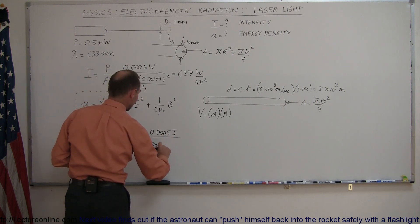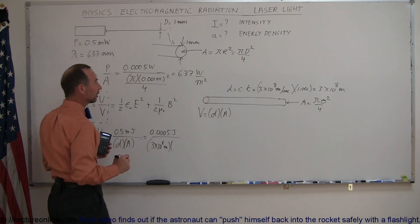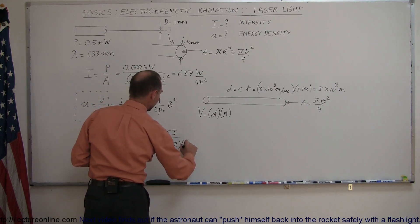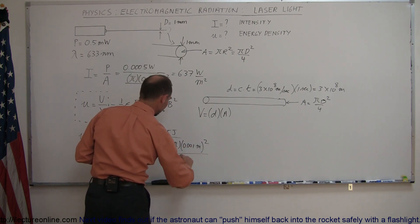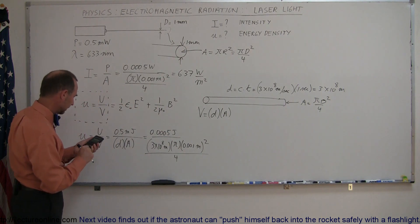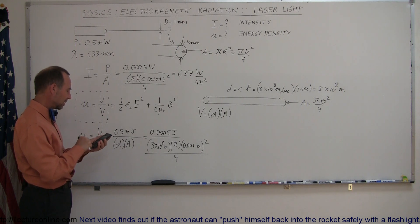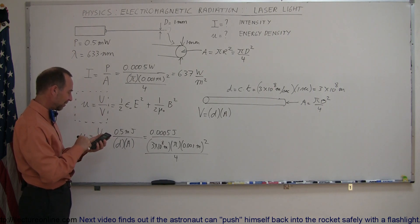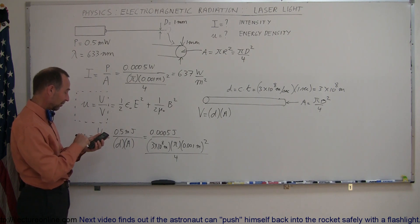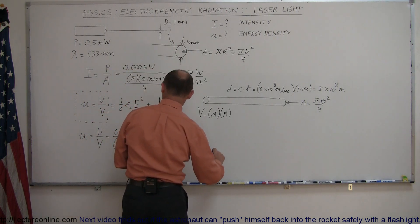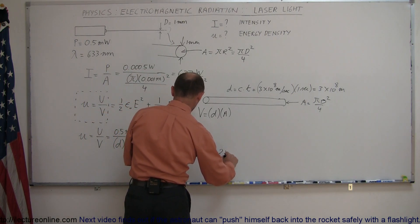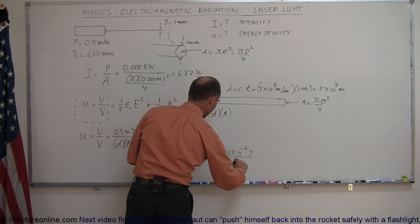The energy density equals 0.0005 joules divided by the distance (3×10⁸ meters) times the cross-sectional area π times (0.001 meters)² divided by 4. Computing this: 0.0005 divided by 3×10⁸, divided by π, divided by (0.001)², then multiplied by 4, gives an energy density of 2.12×10⁻⁶ joules per cubic meter.